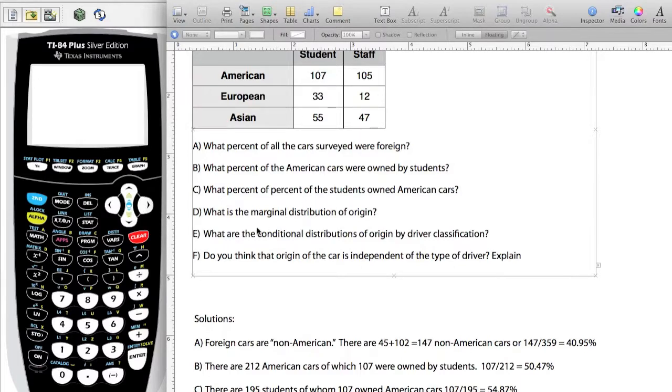The next question says, what are the conditional distributions of origin by driver classification? You have two ways. Based on the way the question is asked, it's saying, what are the conditional distributions of origin for the driver classification? So, out of the students, can you tell me the percentages that had American, European, and Asian? And of the staff members, what were the American, European, and Asian classifications?